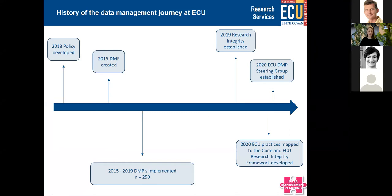Like many other institutions, we have a checkered history of data management planning. In 2013, a policy was developed. We had a paper-based DMP available from 2015, with around 250 DMPs created over a five-year period — mostly HDR students, as it was a requirement of confirmation of candidature. The big shift happened in 2019 when Research Services went through a restructure. My position of Manager of Research Governance was created, and my whole responsibility is really implementing the code. My team of two spent the end of 2019 and 2020 unpacking the code in its entirety, including all supporting guides, articulating everything the university was responsible for, as well as researchers. We celebrated the things done well, found the gaps, and data management stood out as our biggest gap.